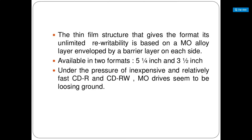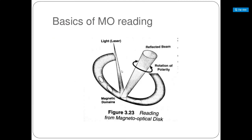To speak broadly, the magneto-optical disk is a thin film structure with an unlimited rewritable format based on a MO alloy layer enveloped by a barrier layer on each side. They are available in two formats: 5.25-inch and 3.5-inch. Under pressure from inexpensive and relatively fast CD-R and CD-RW drives, MO drives seem to be losing popularity compared to optical discs.